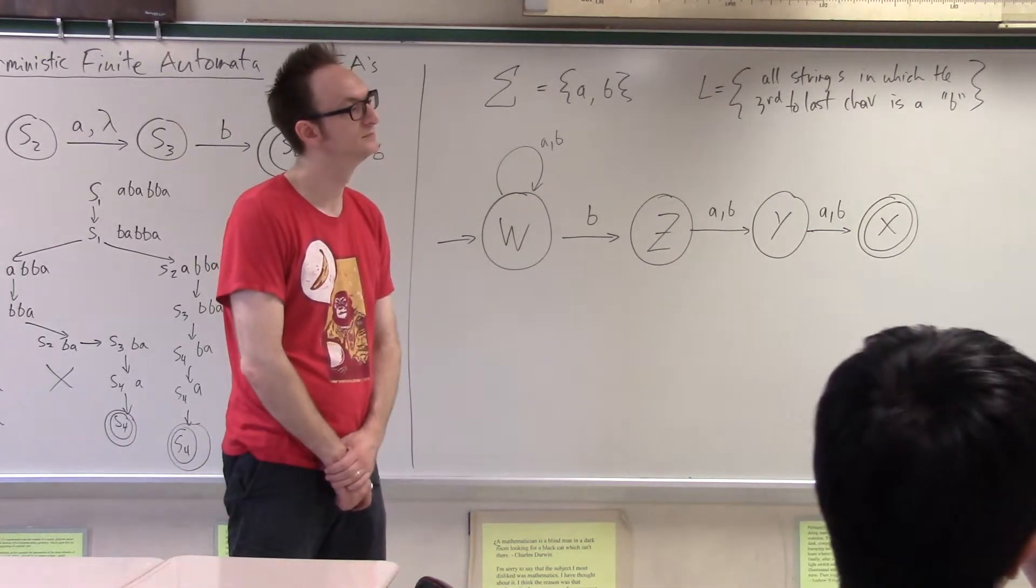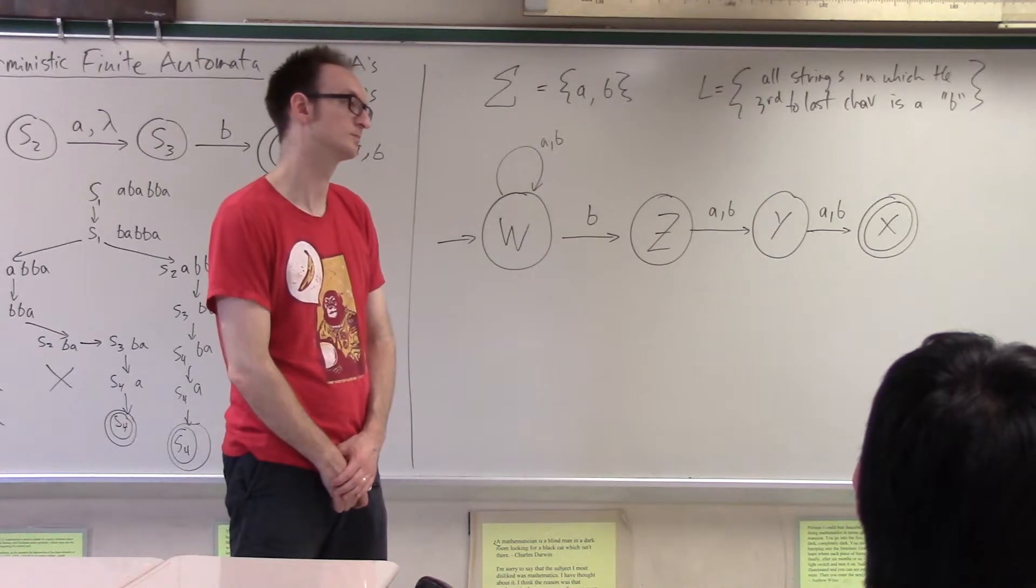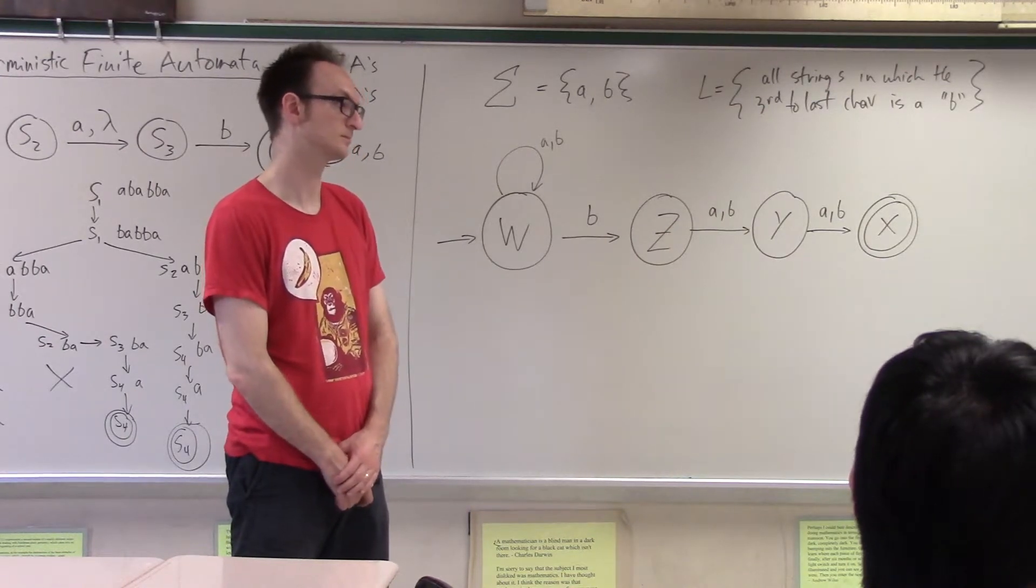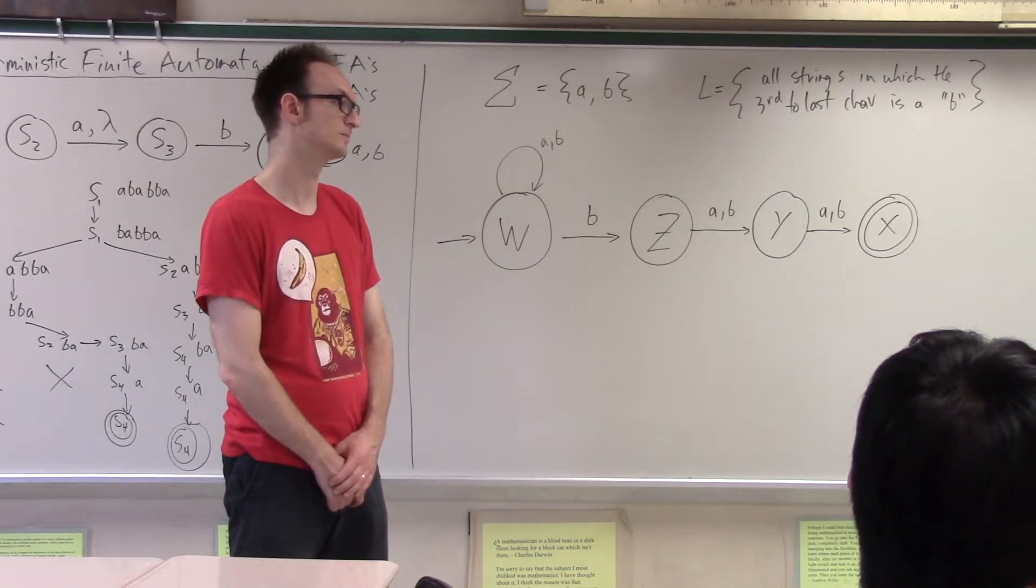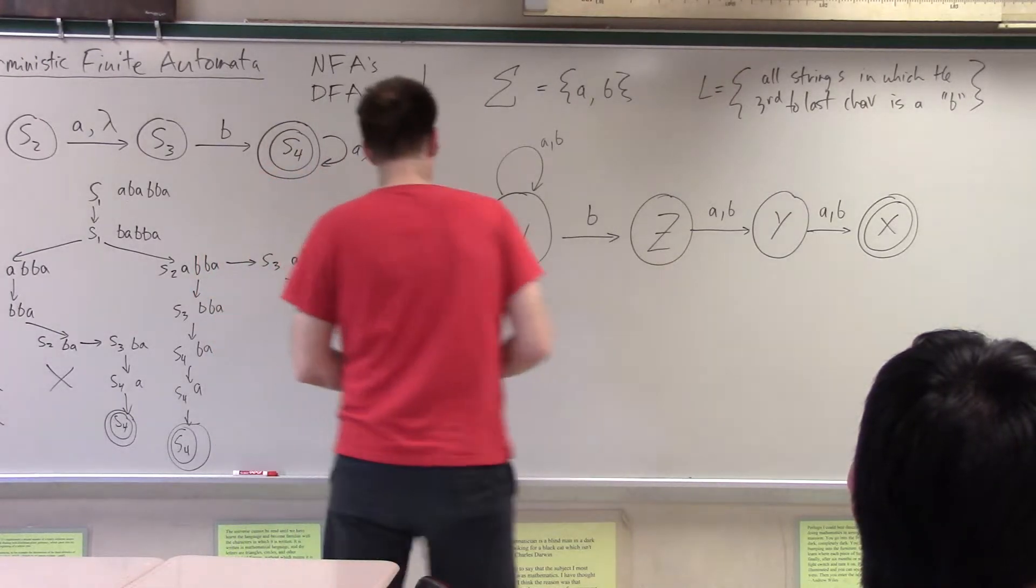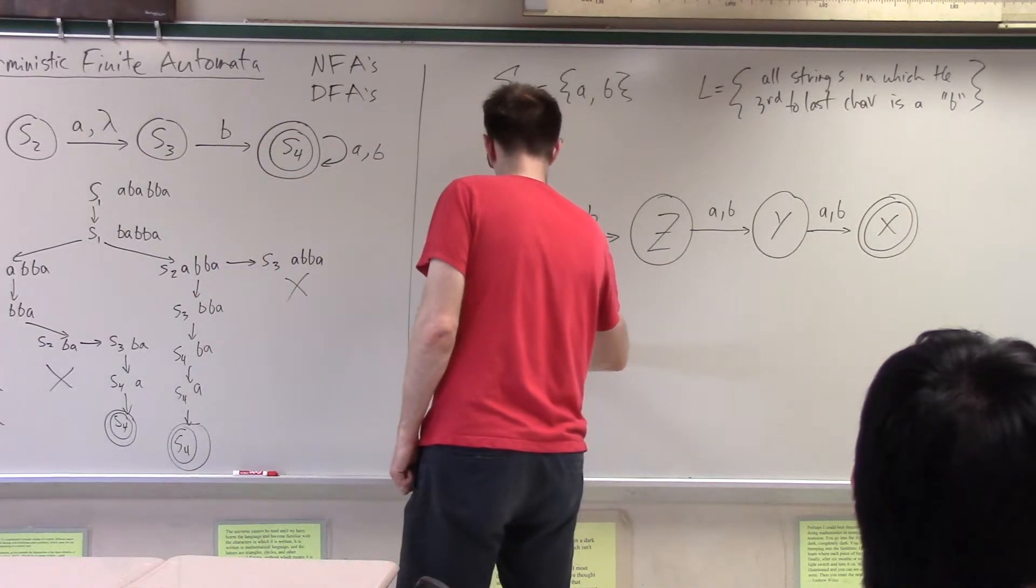Well, like, you aren't, if the B is like the fourth to the last one, and then there's like an A to the third to the last one, you can go there, but when you get to the X, you'll have like one more character left, right? So then you'll die.